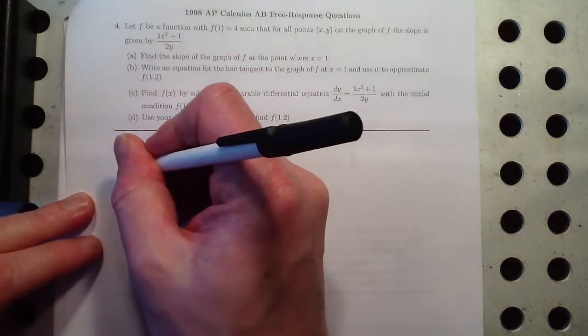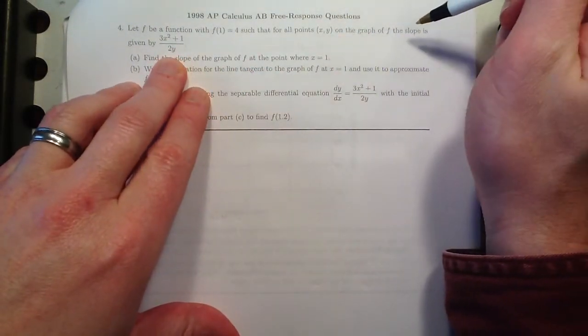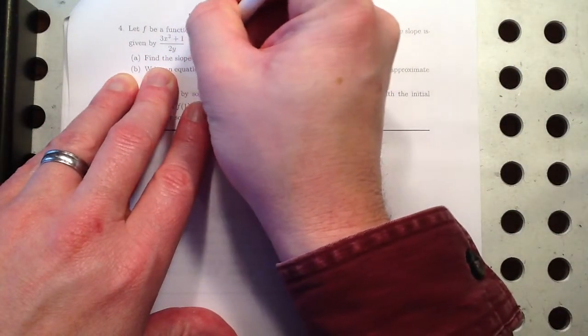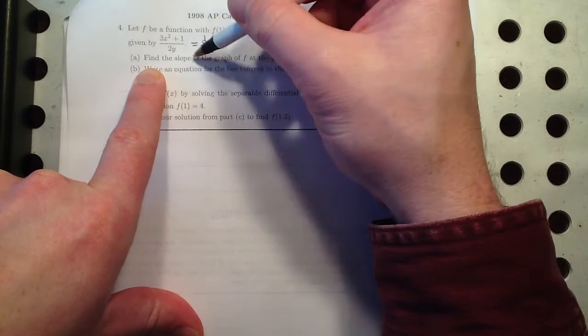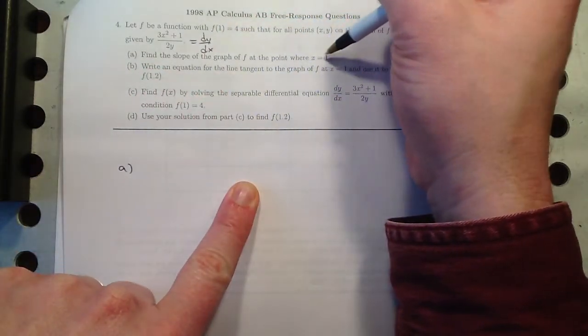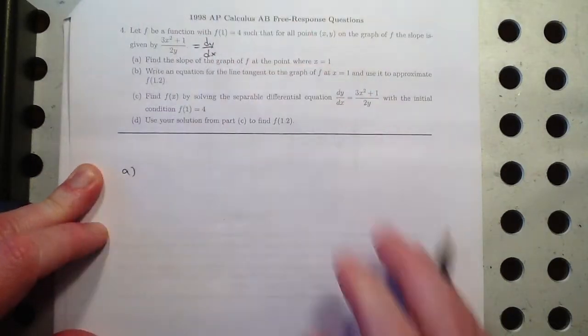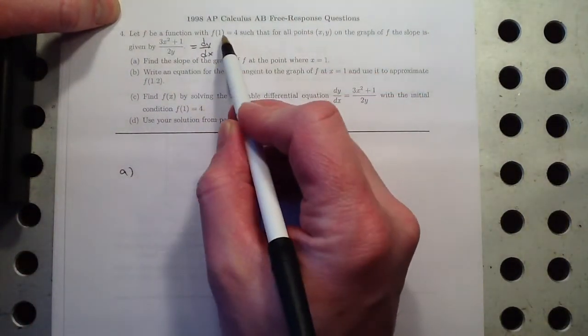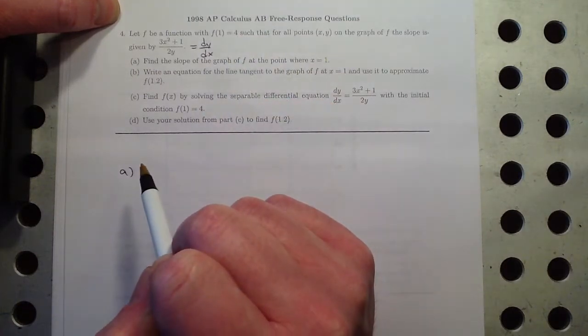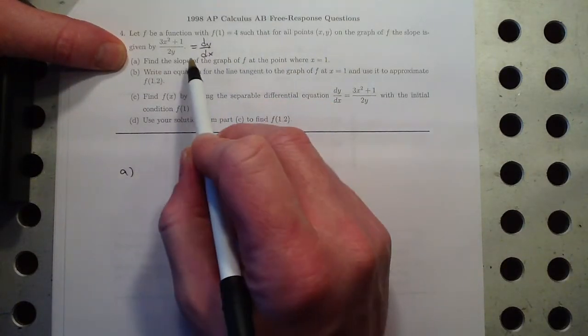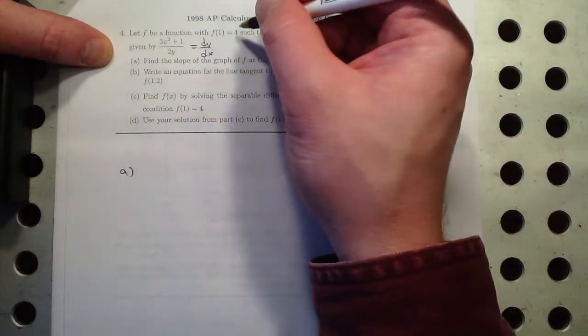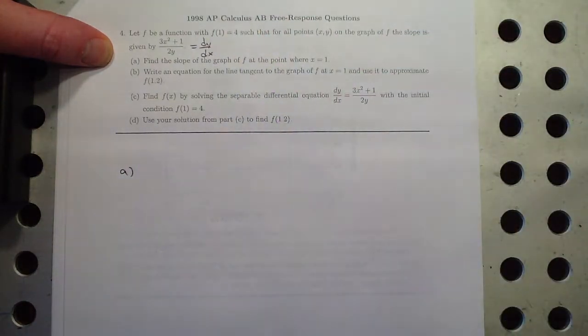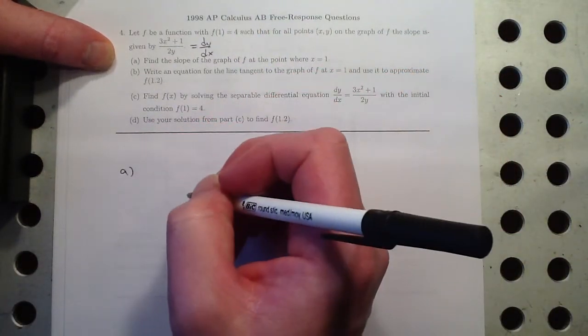And let's see which parts we can do. So number 4, part A, I've got a function. And the slope is given by this, so this is dy/dx. And f of 1 is equal to 4. Find the slope of the graph of f at the point where x equals 1.